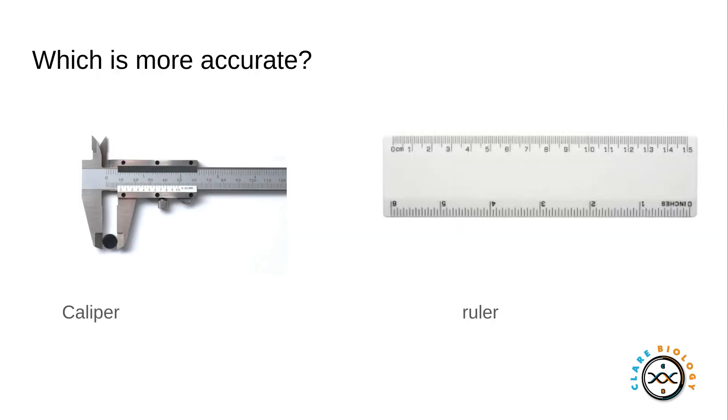Another way to improve accuracy of results is using things like a caliper rather than a ruler. The caliper is a lot more accurate and closer to that true value that you're trying to measure.